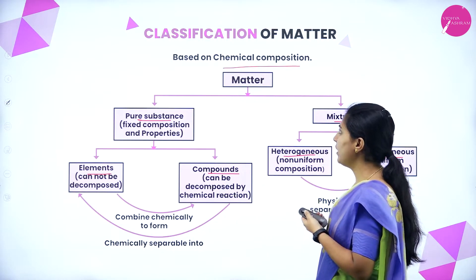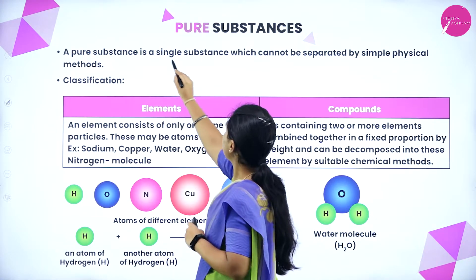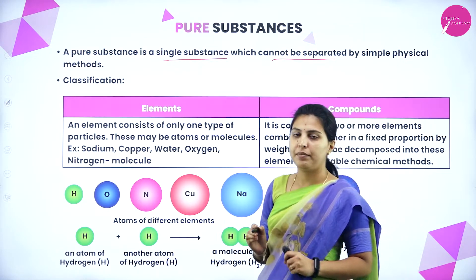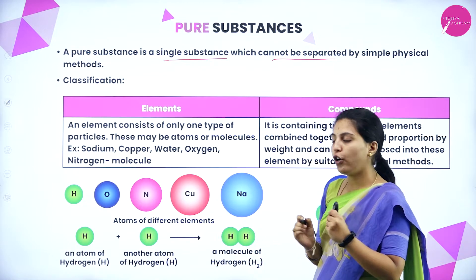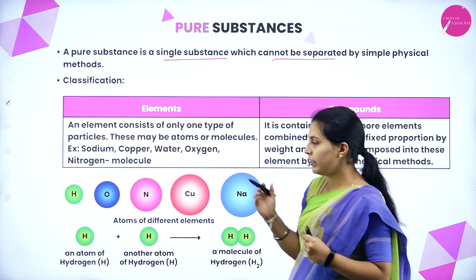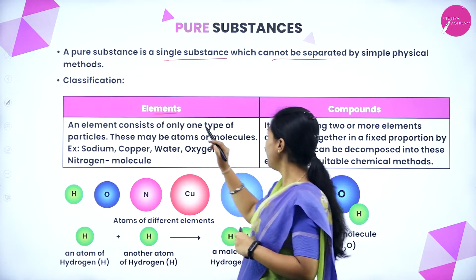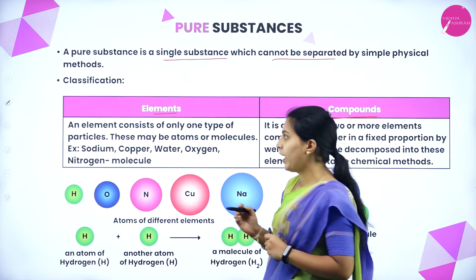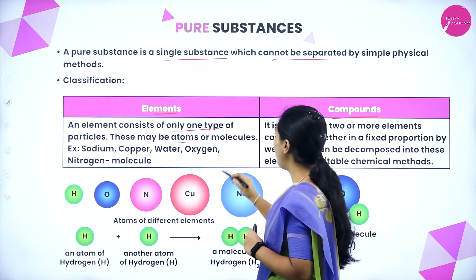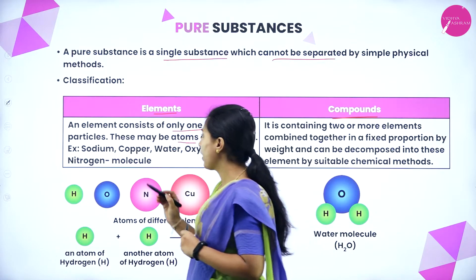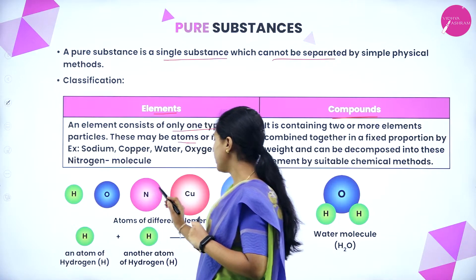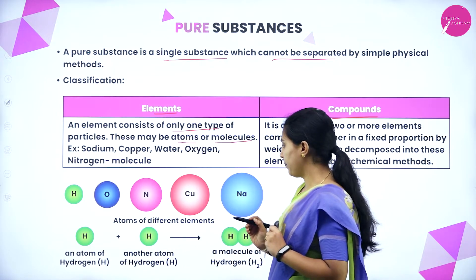A pure substance is a single substance which cannot be separated by simple physical methods. It is divided into elements and compounds. An element consists of only one type of particle — either atoms or molecules. Examples include sodium, copper, oxygen, and nitrogen. Hydrogen atoms combine to form H₂ — it has only one type of particle, so it is an element.